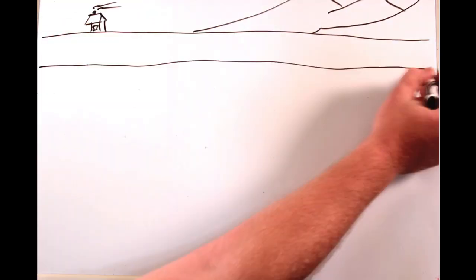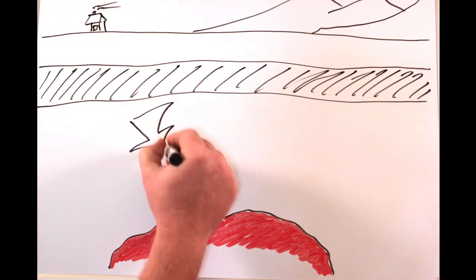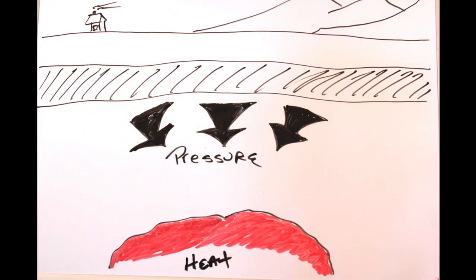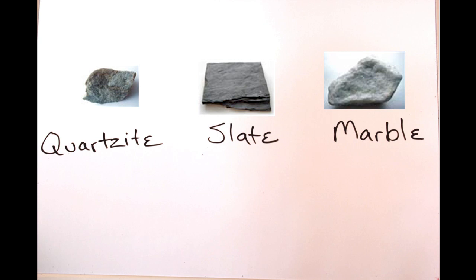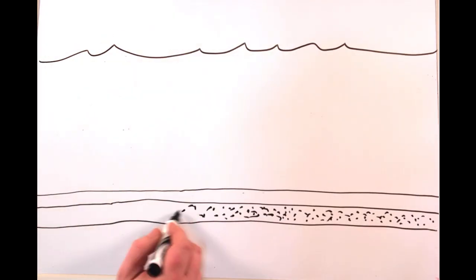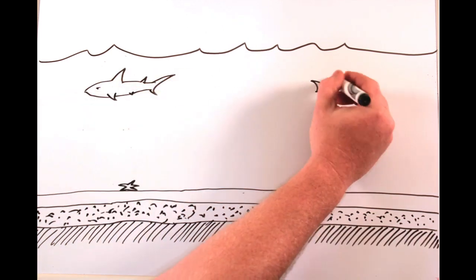Metamorphic rock forms when other rocks have been exposed to extreme heat and pressure, changing over millions of years. Quartzite, slate, and marble are examples of metamorphic rock.